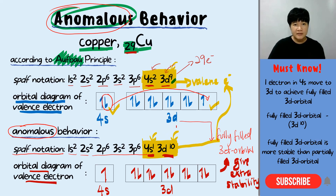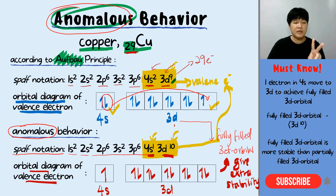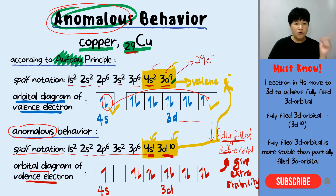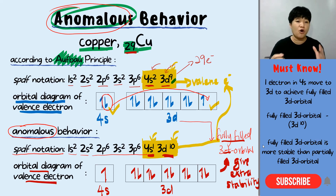The extra stability is what we are trying to achieve in the anomalous behavior of copper. Anomalous behavior is only because we want to gain more stability. In our syllabus, we only learn about copper and chromium — don't worry about the rest of the elements. Only two anomalous behaviors: copper achieves a fully-filled 3d orbital, and chromium achieves a half-filled 3d orbital — both giving extra stability.